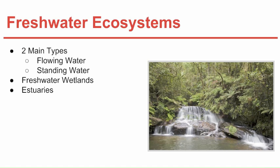Estuaries are wetlands formed where a river meets the sea, providing a mixture of fresh and salt water — a very specific ecosystem. Very few organisms can survive in both fresh and salt water. Estuaries contain a lot of detritus, which are small floating organisms providing food for larger organisms, and they support an astonishing amount of biomass with thousands of different organisms.